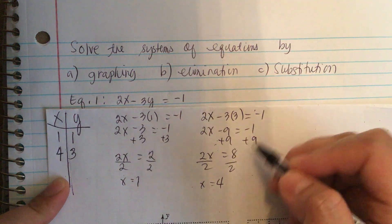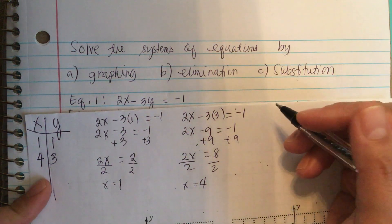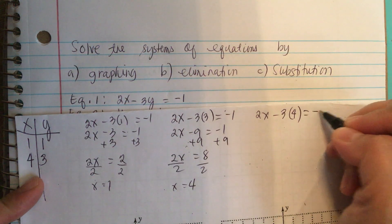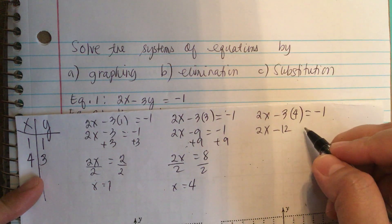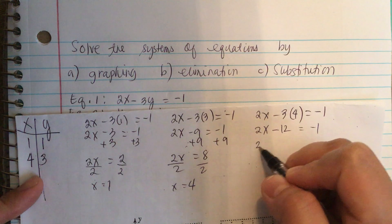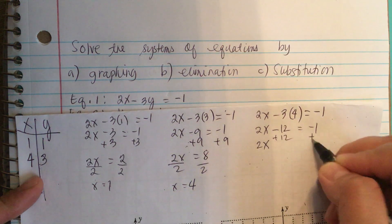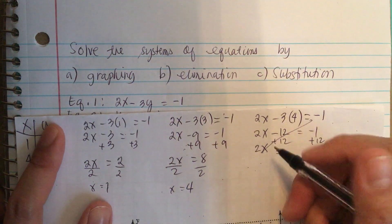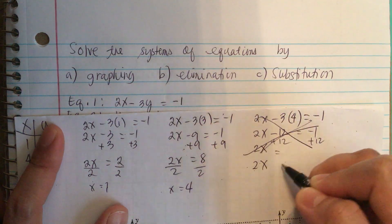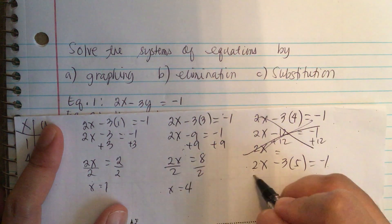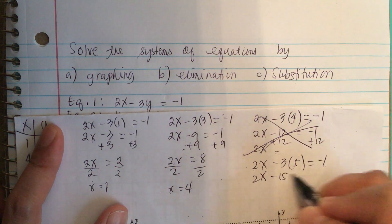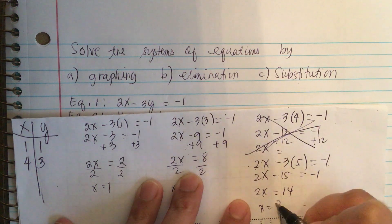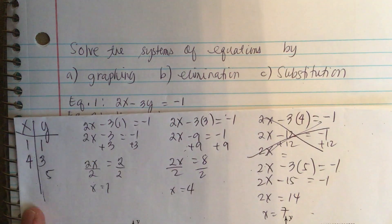When y is equal to 5: 2x minus 3 times 5 equals negative 1. So, 2x minus 15 equals negative 1. Add 15 to both sides. So, 2x is equal to 14, or x is equal to 7. When y is 5, x is 7.